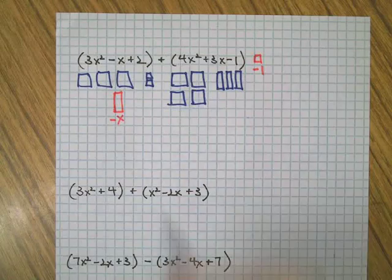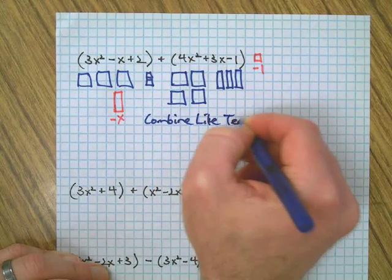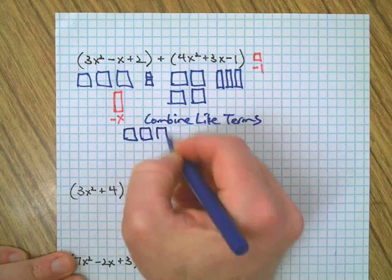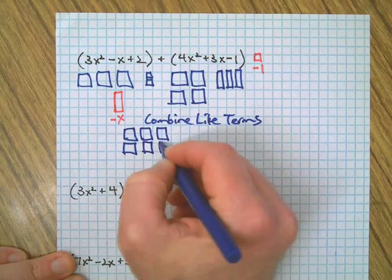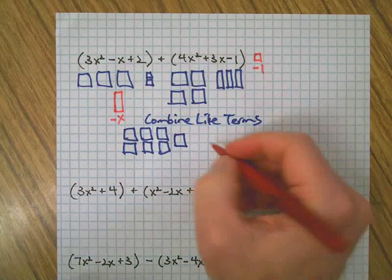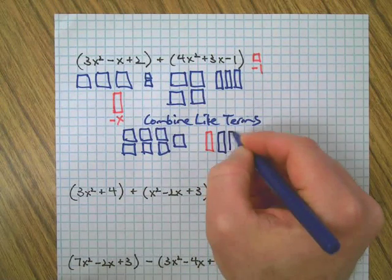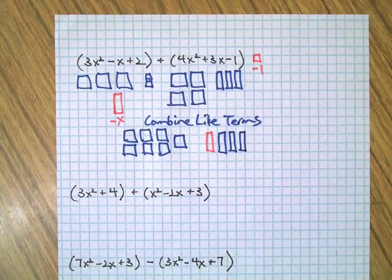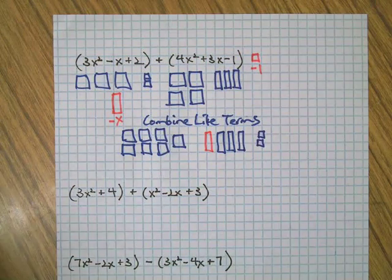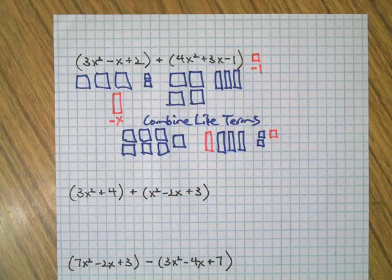Okay. Let's combine like terms. So, I'm going to put all of these. All the x squares together. I'm going to put all the x's together. Including the negative ones. Or the negative one. Then, there was three positive ones right there. Then, I have two positive ones. And one negative one. Okay. So, there I combined like terms. Or I put all the same looking things together.